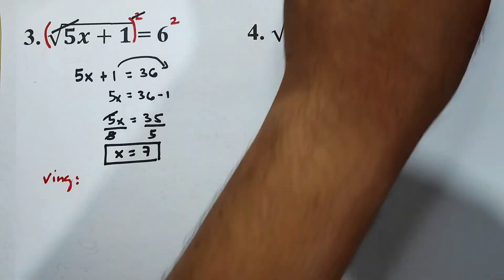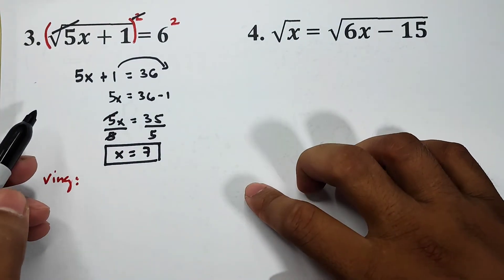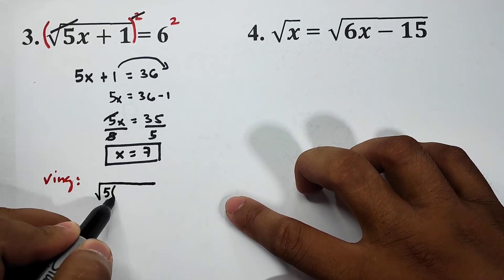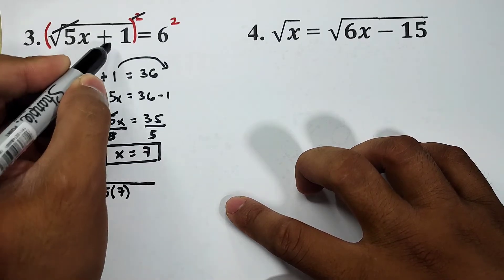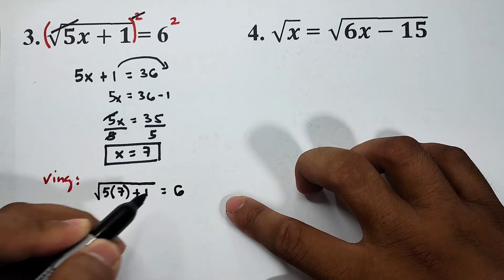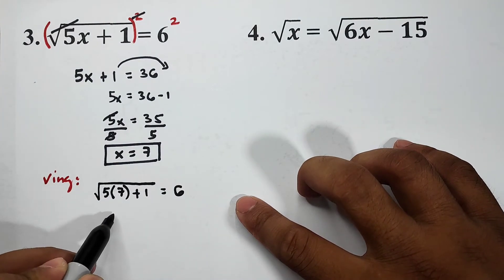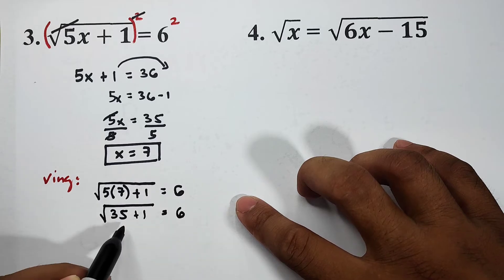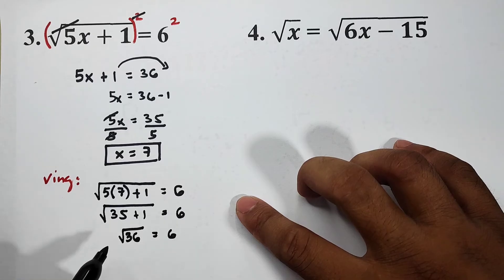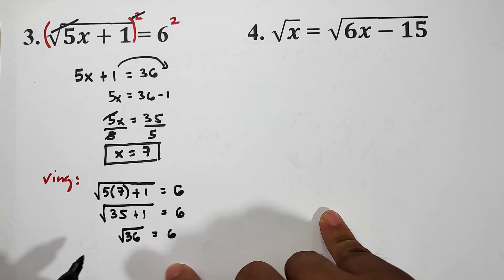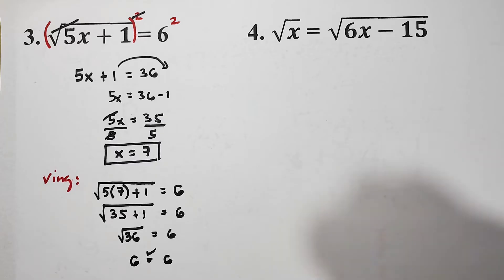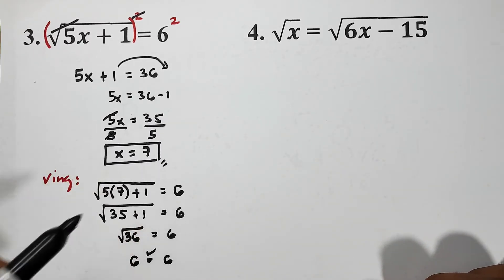For the checking, using the original equation, we replace x with 7: square root of 5 times 7 plus 1 is equal to 6. Five times 7 is 35, plus 1 gives us square root of 36, which is equal to 6. The square root of 36 is 6, so they are equal — meaning the answer is correct. The value of x is 7.